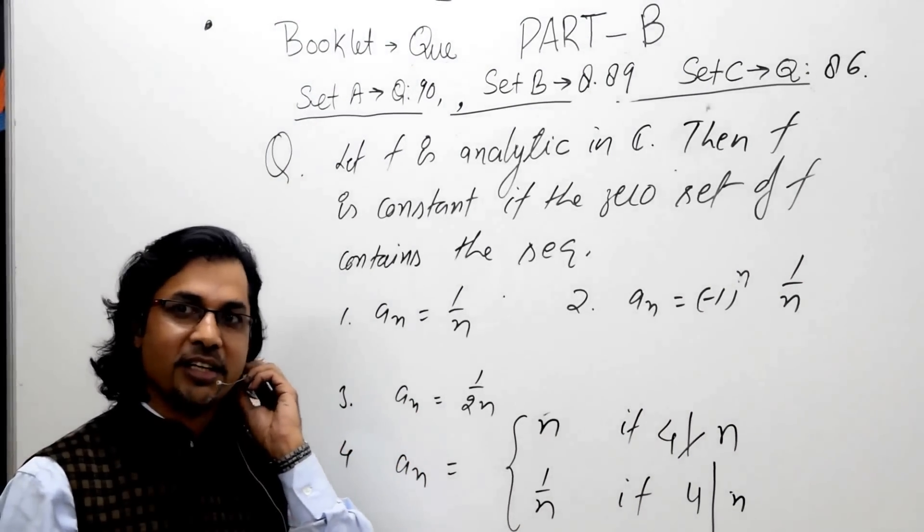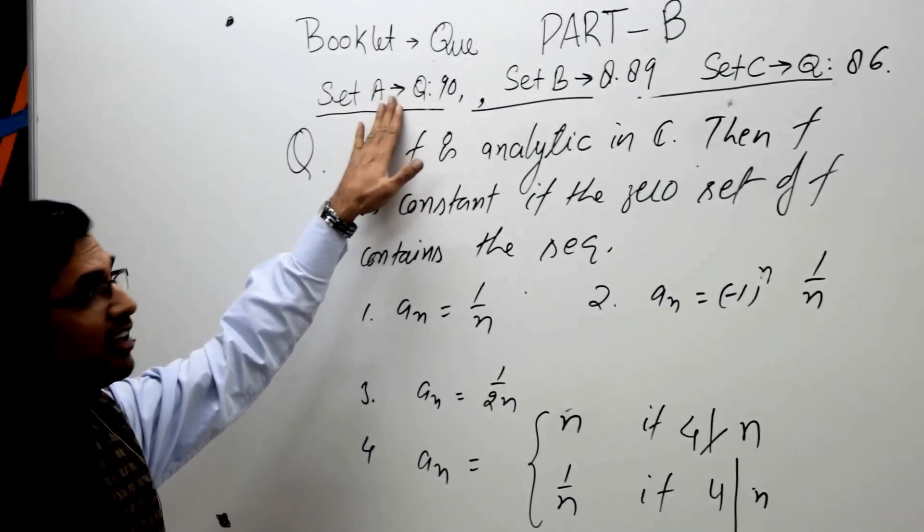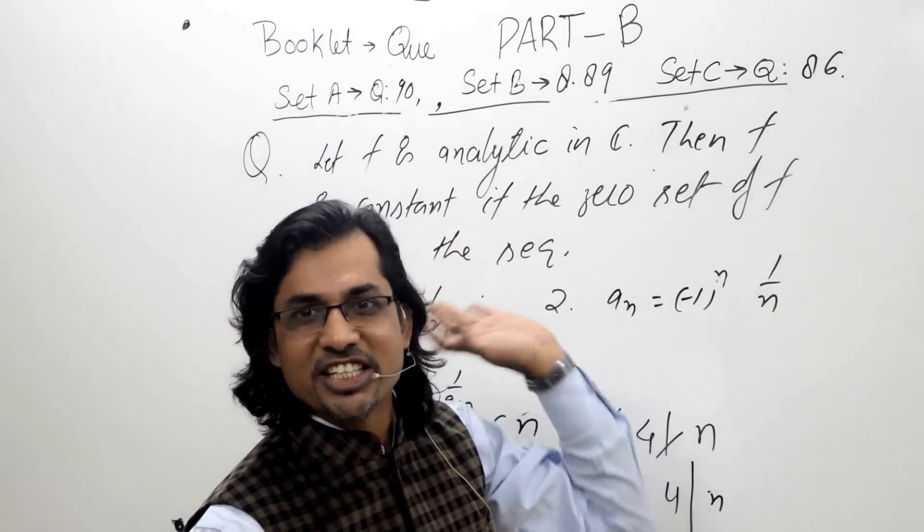Let's see. This question is question number 19 in set A, question number 18 in set B, and question number 86 in set C.